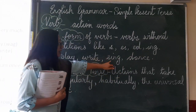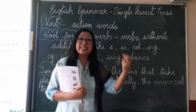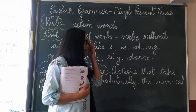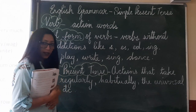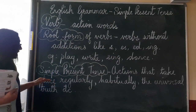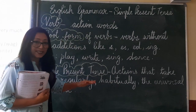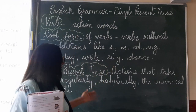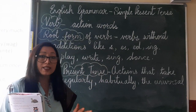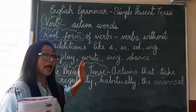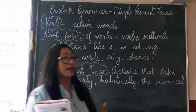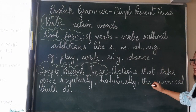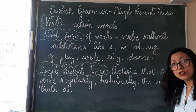So, you have write, sing, dance, eat, sit — these are the root form of the verbs. Then you have simple present tense. Simple present tense are actions that happen regularly, habitually, every day — what you do every day — or it is the universal truth.